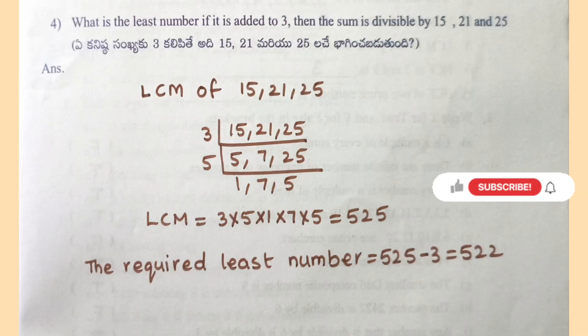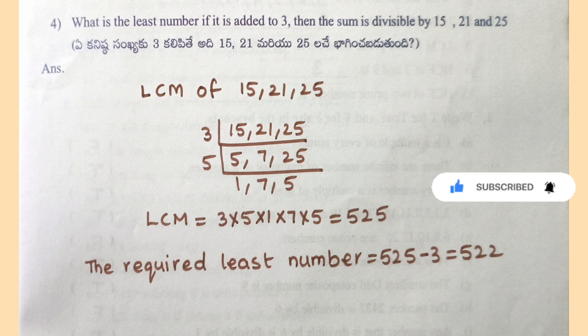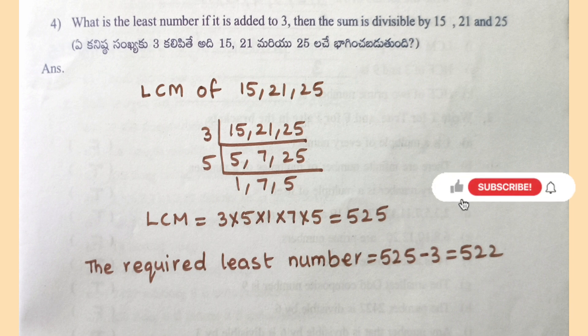Fourth question: What is the least number such that if 3 is added to it, the sum is divisible by 15, 21 and 25? LCM of 15, 21 and 25 = 3×5×7×5 = 525. The required least number = 525 − 3 = 522.